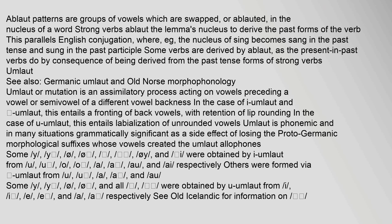Oblaut patterns are groups of vowels which are swapped, or ablauted, in the nucleus of a word. Strong verbs ablaut the lemma's nucleus to derive the past forms of the verb. This parallels English conjugation, where the nucleus of sing becomes sang in the past tense and sung in the past participle. Some verbs are derived by oblaut, as the present-in-past verbs, by consequence of being derived from the past tense forms of strong verbs.